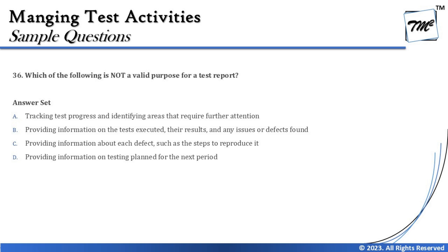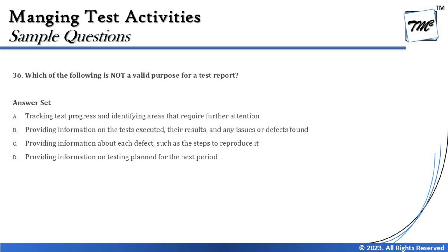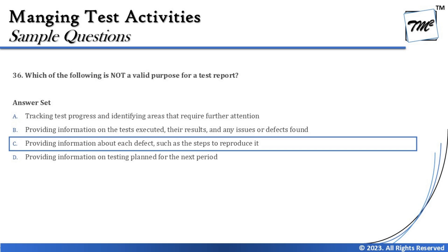Option D says providing information on the testing plan for the next period — yes, that is a straightforward component of the test progress report, covering what is planned for the next iteration or phase. The answer that contradicts the purpose of test reports is option C. The right answer for this question is C — providing information about each defect such as steps to reproduce it is not a valid purpose of a test report; for that, we create a defect report.